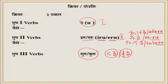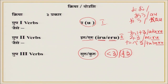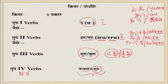Group 1 verbs are called O-ending verbs. Examples are: 'au,' 'kau,' 'yomu,' — all are O-ending verbs. Additionally, there is a fourth group — the noun-verb group — where a verb is formed by combining a noun with a verb. For example, 'benkyou suru' means 'to study.' So there are four main groups of verbs in Japanese.